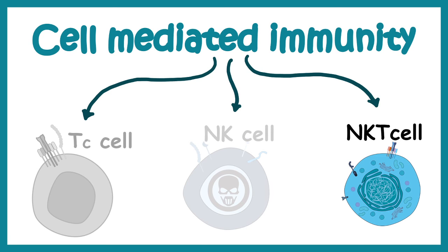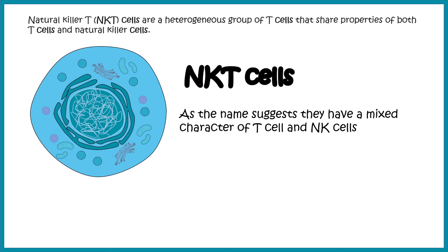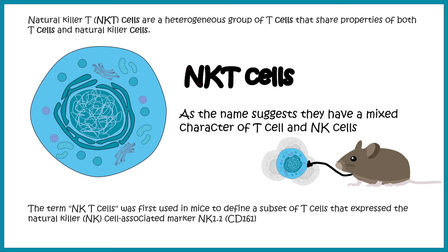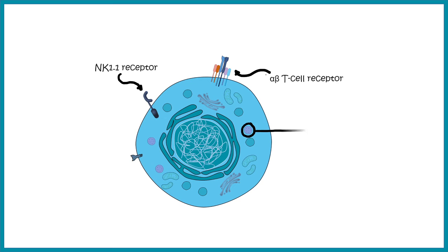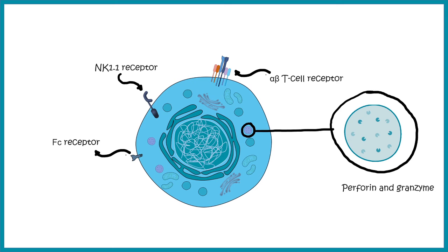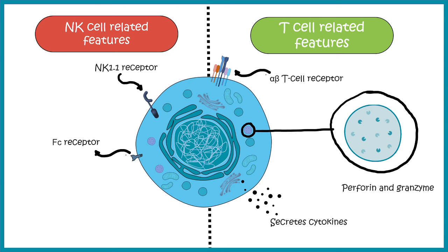The third cell type is NKT cells, which share features with both T cells and NK cells. First discovered in mice, they showed strong resemblance to T cells but also expressed the NK1.1 surface marker. NKT cells have a T cell receptor, NK1.1, granzyme and perforin-loaded vesicles, and FC receptors — some characteristics similar to T cells and some similar to NK cells, placing them at an interface between the two.